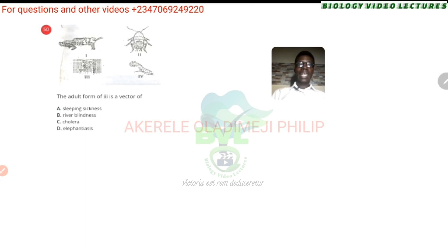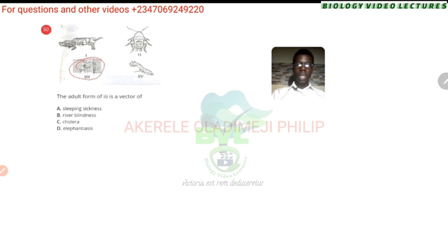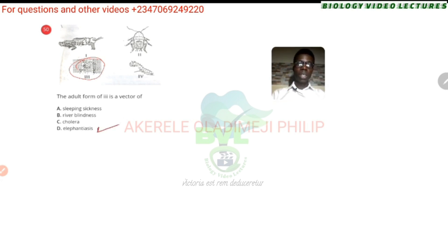The adult form of three — the larval form of mosquito — sleeping sickness is done by the tsetse fly. River blindness is transferred by a black fly. Cholera is transferred by the normal housefly. Elephantiasis is transferred by a type of mosquito — Aedes. There's a filarial worm in them, so the filarial worm is the pathogen and the mosquito vector causes elephantiasis, which makes people's limbs swell.